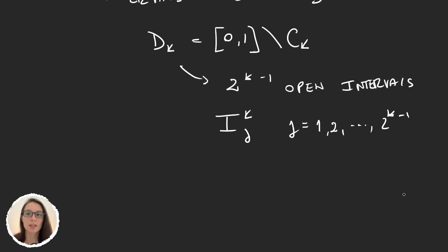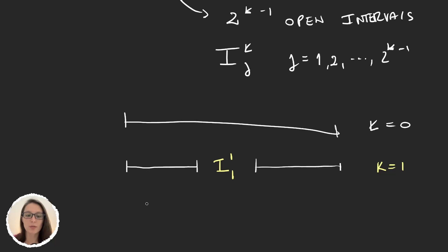Let's go with an example. We had [0,1] as the first step, k equals 0. Then we would remove the middle third and we would have this. So this interval in the middle would be i_1,1, because here we are at k equals 1. Then in the following step we would remove the middle third from each of these intervals. So now our intervals would be i_2,1 and i_2,2, because again we are at k equals 2, and so on.